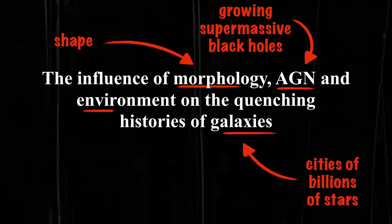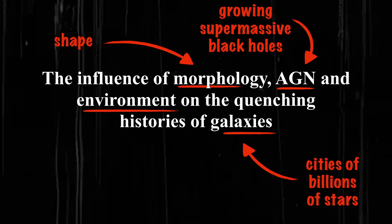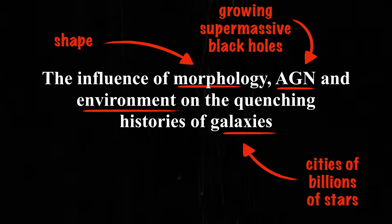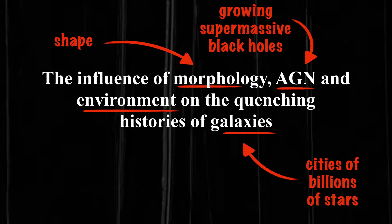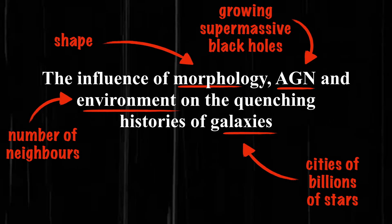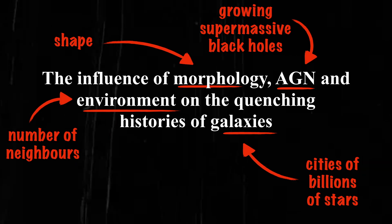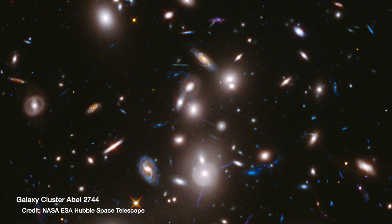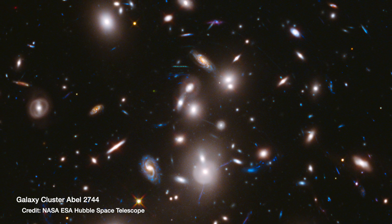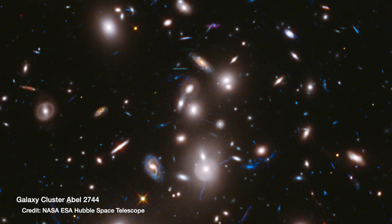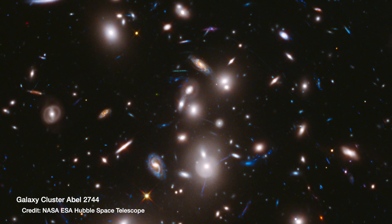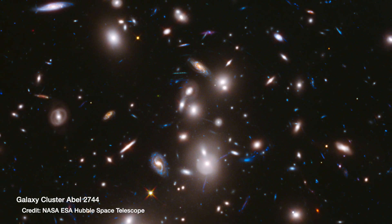Then you've also got environment. When we talk about the environment of galaxies, we mean whether they are in a very underdense environment - so they're pretty much left alone to their own devices - or whether they're in a very dense environment, such as a group or a cluster of galaxies that are all very near each other in the universe.